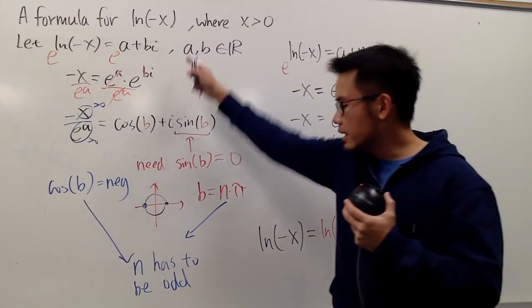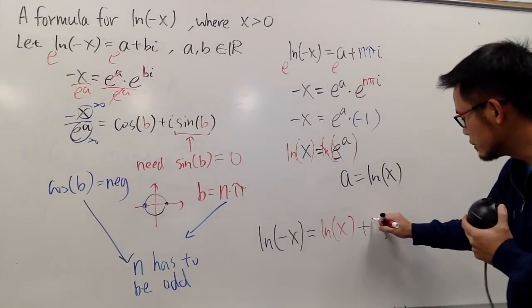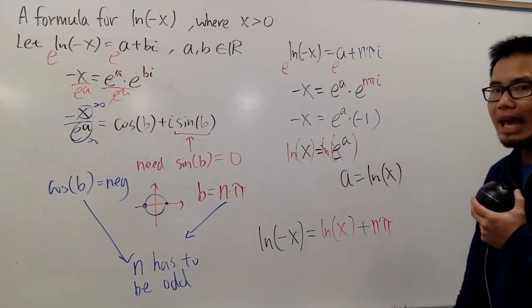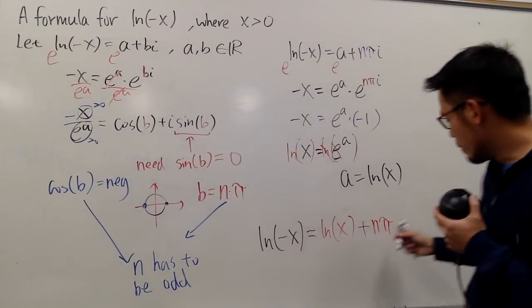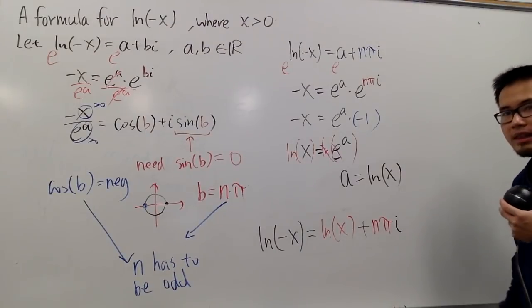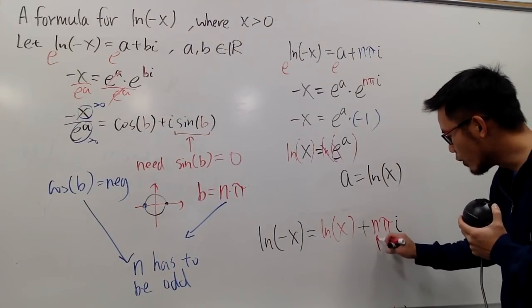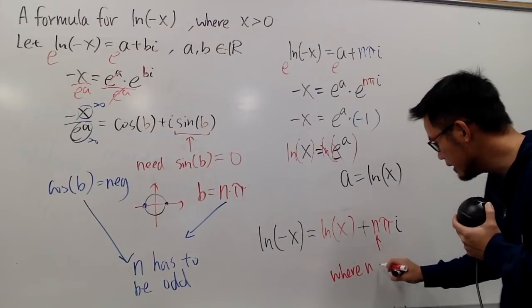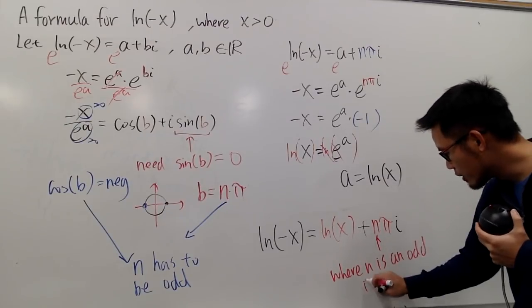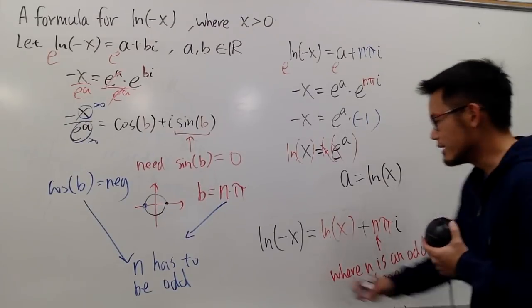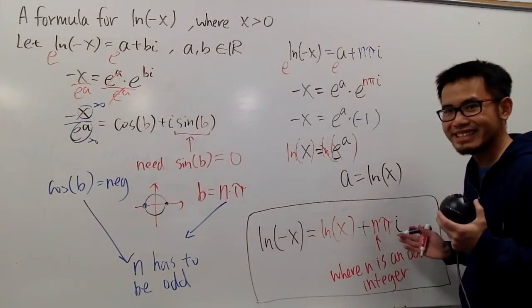And then, we add it with the b, which is npi, so let me just put down npi right here, and at the end, we have to multiply that by i. And the final touch is that, you have to know n, where n is an odd integer. So, this is the final touch, and that's it.